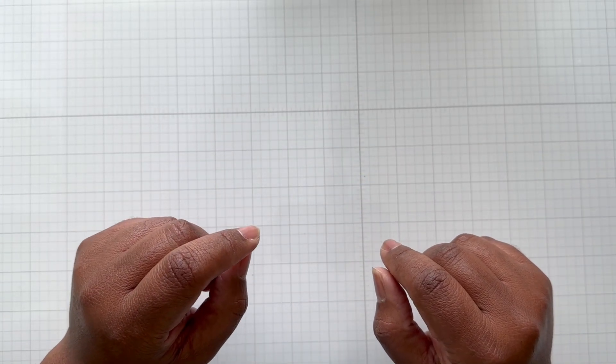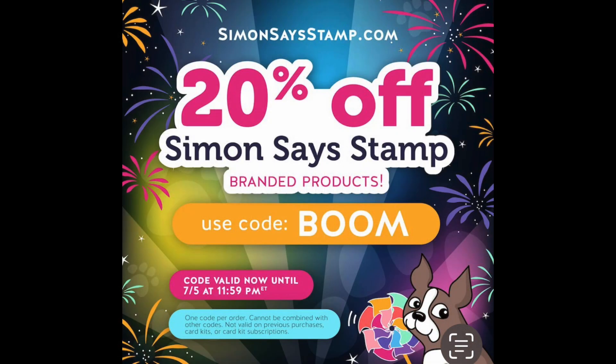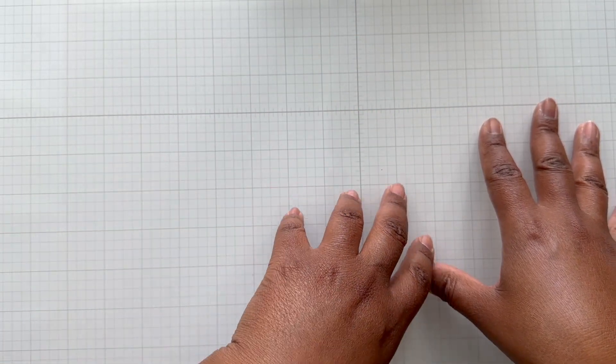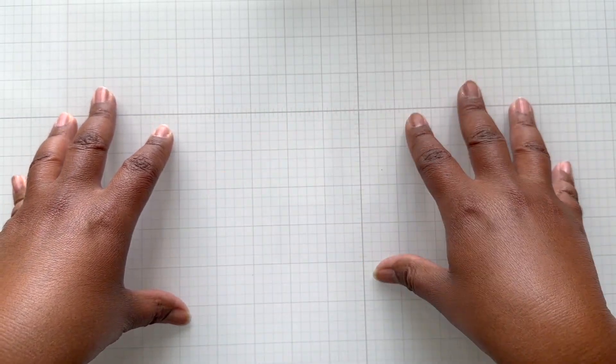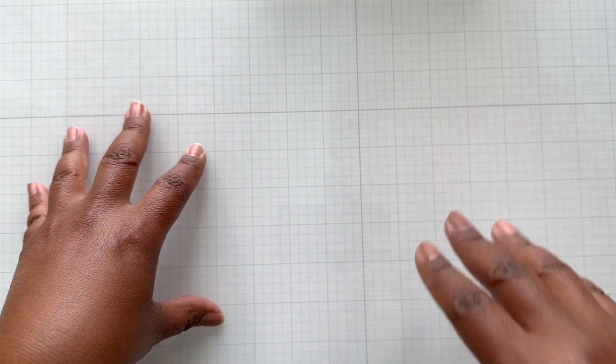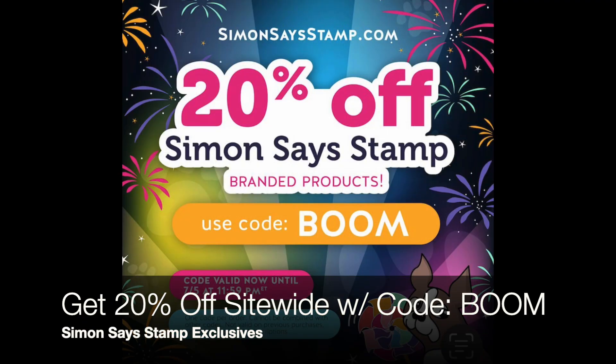Next, Simon Says Stamp. They have 20% off their Simon Says Stamp products. But don't discount their products because their exclusives are fantastic. You have paper, crafty tools, great dies, stamps, stamp and die sets, wonderful stencils. So you can get 20% off with the code BOOM.